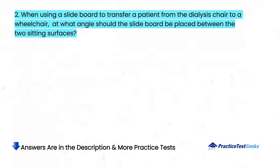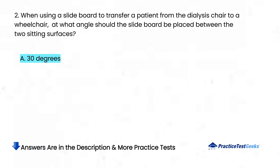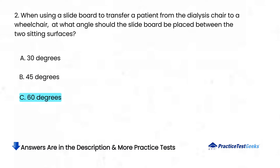When using a slide board to transfer a patient from the dialysis chair to a wheelchair, at what angle should the slide board be placed between the two sitting surfaces? A. 30 degrees. B. 45 degrees. C. 60 degrees. D. 90 degrees.